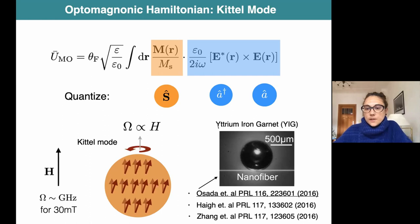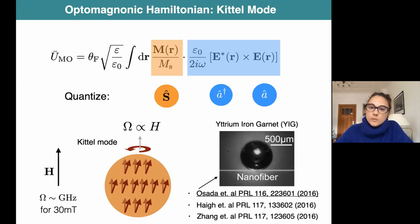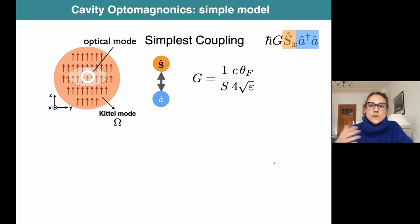What you see here is a very nicely polished sphere of yttrium iron garnet, a ferrimagnetic insulator which is transparent in the infrared. The light enters through a nanofiber coupled evanescently to the sphere, then it will spend a while inside the material. When it comes out, it contains information of the coupling of the light with the magnons. More precisely, what they measure are sidebands at the magnon frequency.